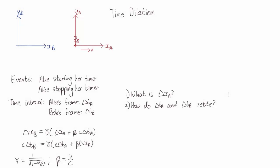So in Alice's frame, there's no spacing between these events. They happen in the same location along the x-axis. So delta xa is equal to zero.